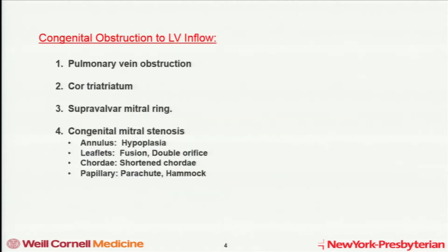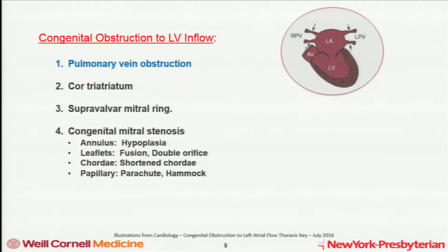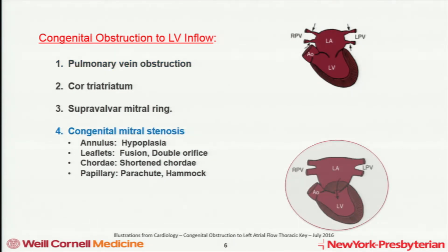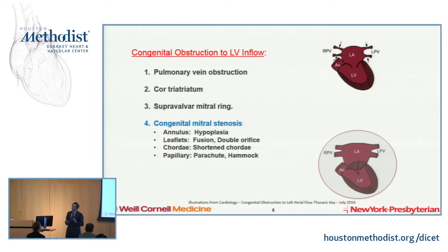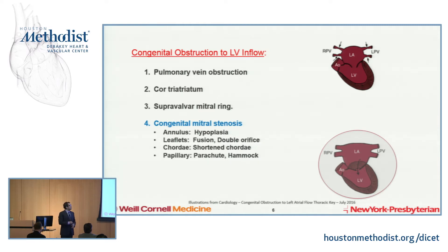When we think about obstruction to left ventricular inflow, you can think of it anatomically from different levels of obstruction, starting at the level of the pulmonary veins. You can have congenital pulmonary vein stenosis — in the acquired adult world we see it sometimes after atrial fibrillation ablation procedures. Congenital mitral stenosis encompasses the whole gamut of the mitral valve apparatus: the annulus, leaflets that can be fused, double orifice mitral valve, shortened chordae, papillaries in closer proximity giving a parachute mitral valve, or occasionally a hammock mitral valve.